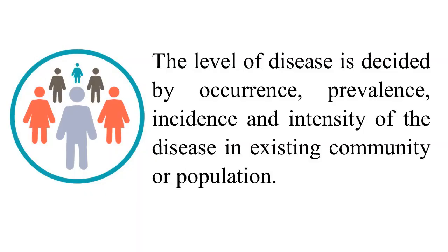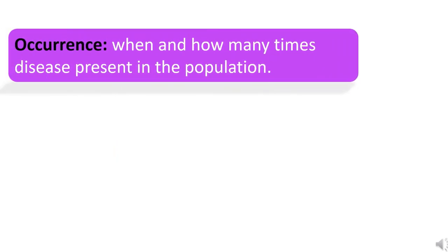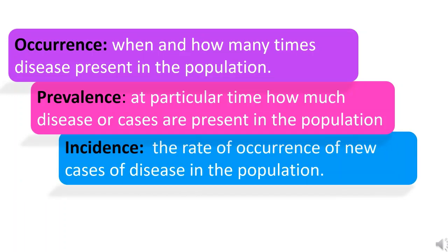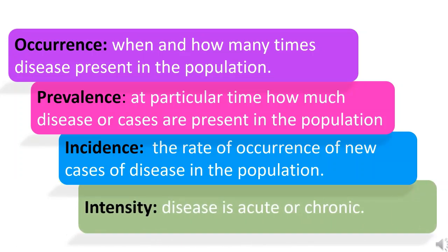The level of disease is decided by its occurrence, prevalence, incidence, and intensity of the disease in an existing community or population. Occurrence refers to when and how many times a disease is present in the population. Prevalence is how many disease cases are present in the population at a particular time. Incidence is the rate of occurrence of new cases of disease in the population, and intensity refers to whether the disease is acute or chronic.